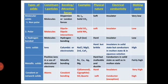Hydrogen bonded molecular solid: made up of molecules where the binding force is hydrogen bonding. Example: water. Physical nature: hard. Electrical conductivity: insulator. Melting point: very low. The second type of crystalline solid is ionic solid. The constituent particles are ions, and the binding force is Coulombic electrostatic force.